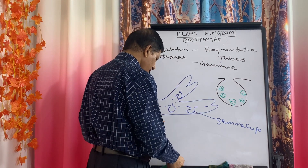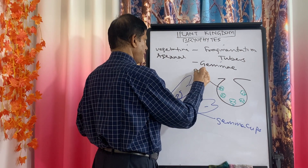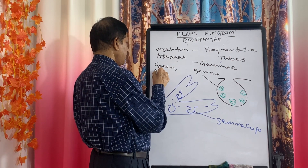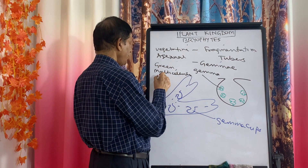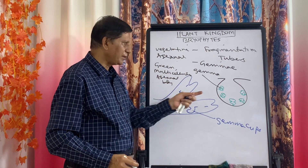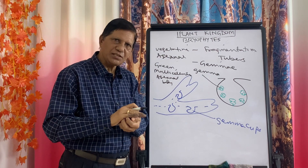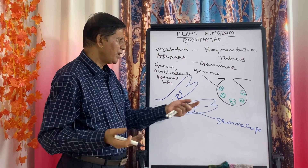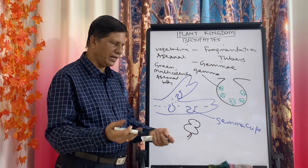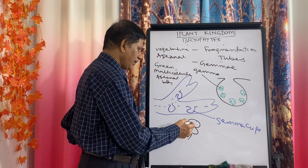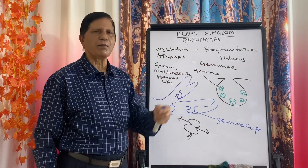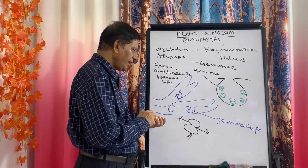Each gemma is a green multicellular asexual body. It is biconvex and has both hyaline cells and green cells containing chloroplasts. When dispersed and falling on moist soil, it germinates to give rise to two plants because it has two growing points.